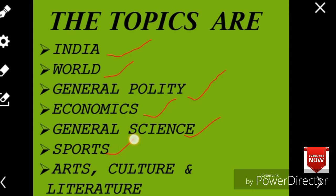The next topics are Sports, and Art, Culture and Literature. In Arts, questions will come from dance, music, singing, and famous paintings. In Culture, you should know traditional Indian culture, classical dances, classical music, and musical instruments. In Literature, you should know prominent authors and famous books of the world, as well as recent Nobel Prize winners in Literature.